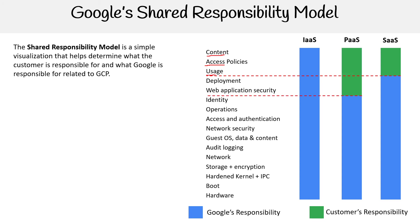Then you have platform as a service. This is something like App Engine, where you have your web application — you built it in Ruby on Rails, Laravel, Next.js, whatever you want. You deploy it, you upload your code, so that's the content itself, and you have to choose how you want to deploy it. You're responsible for the security of that application because you're the one who built it.